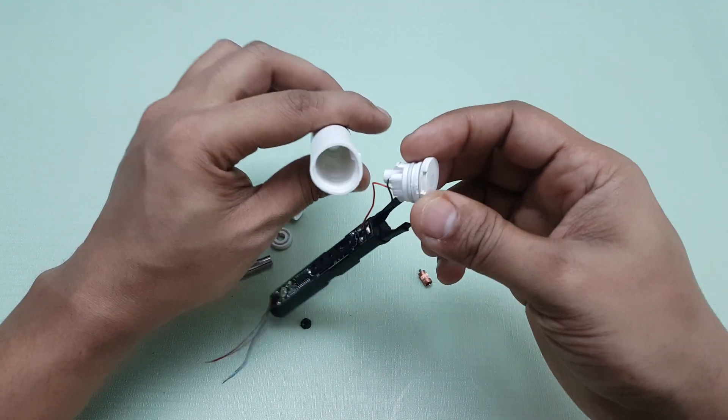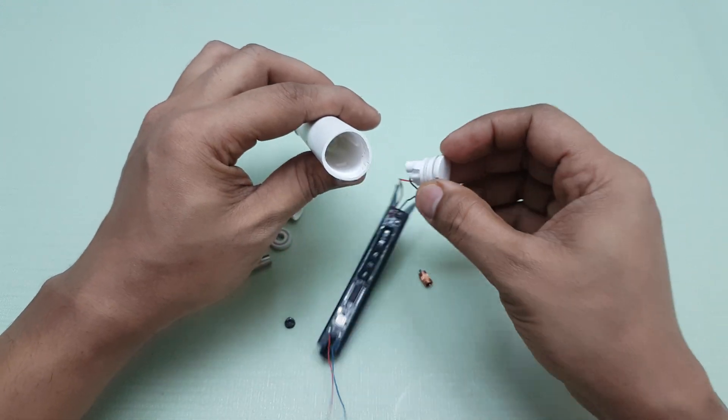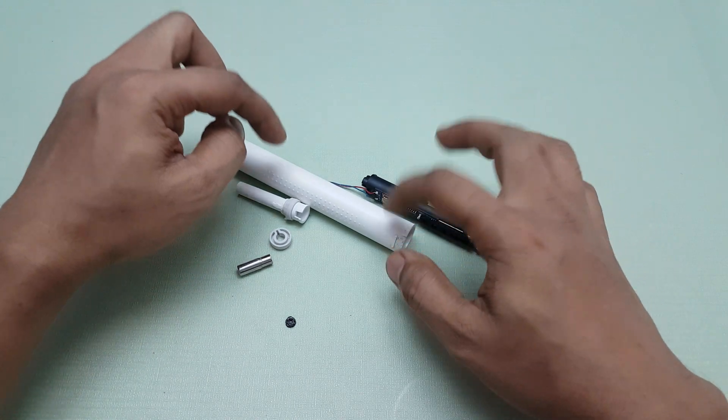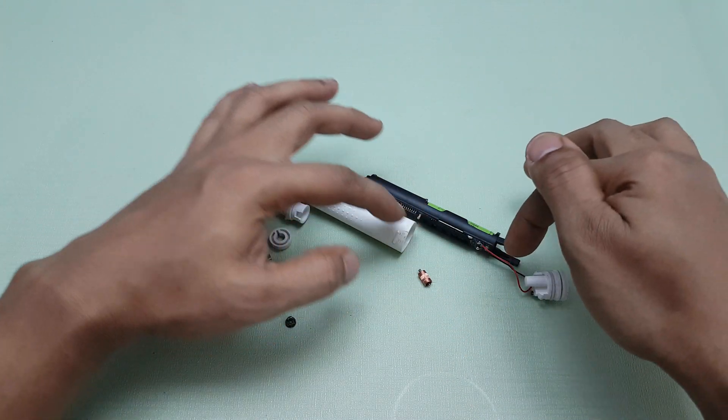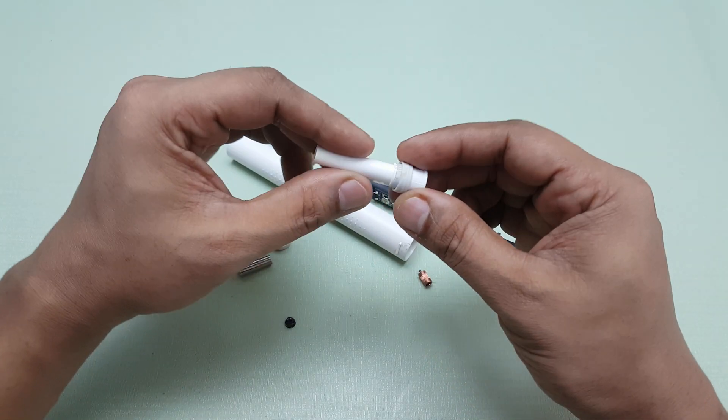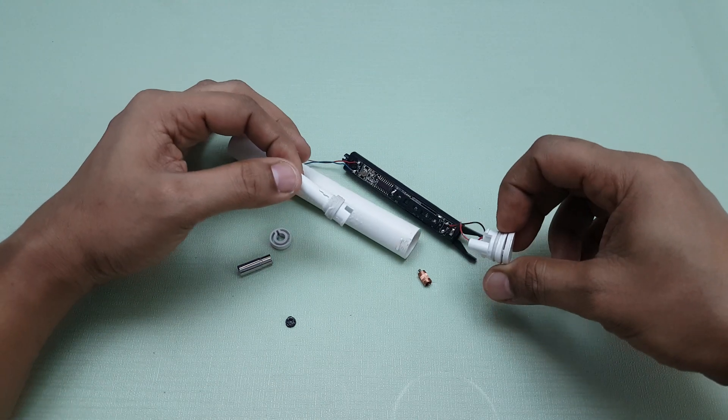Then the rubber seal over here actually seals it. So one doubt that I had before was that my toothbrush has gone bad because the seal might have gone bad and water must have gone in, because there are two seals, one on top which is this one and one at the bottom which is this one.